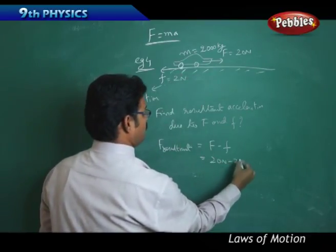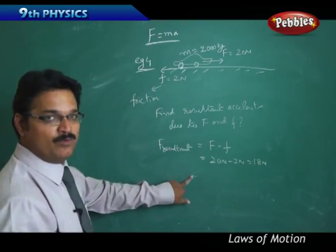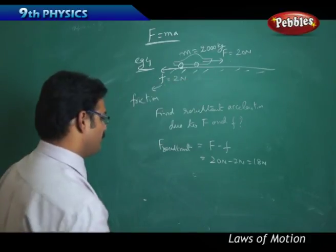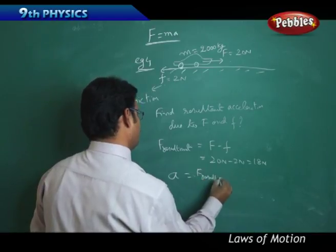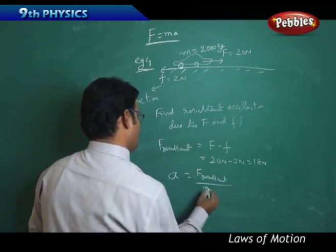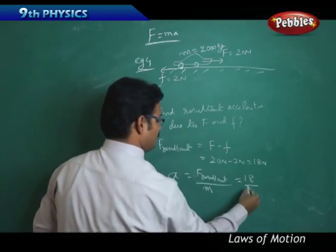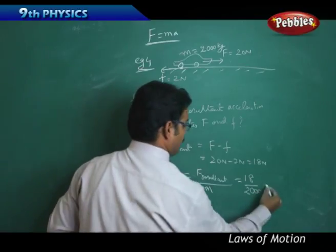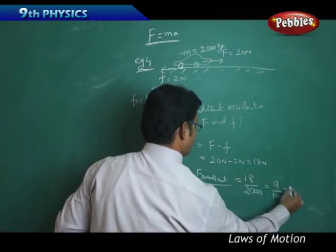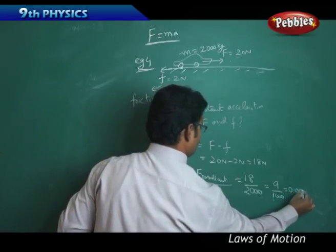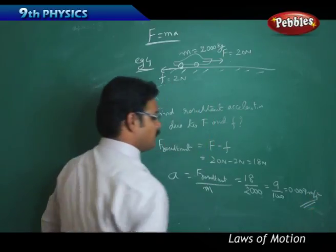Now with this resultant force the car is moving in the forward direction. Therefore, acceleration a = F resultant by mass. So F resultant is 18 and mass is 2000 kg. Therefore, two nines are 9 by 1000, which is 0.009 meters per second square.